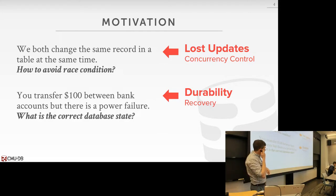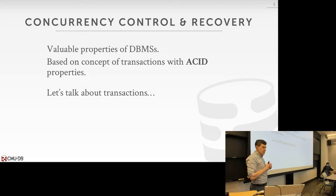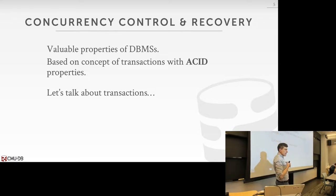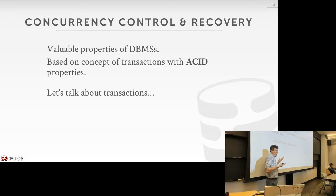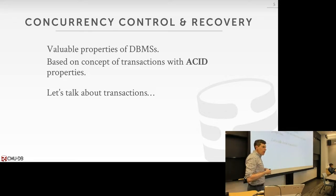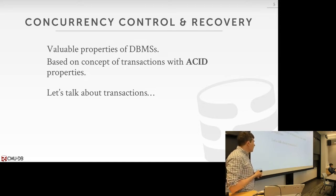Concurrency control and durability are two of the main selling points of a database management system. Whether you're building an application in the cloud, on a cell phone, or on a desktop, you don't want to handle these things yourself — you'll probably get it wrong and end up losing or corrupting data. You want to use a database management system because they have really smart people who have spent a lot of time making sure these things happen correctly.